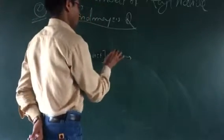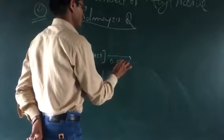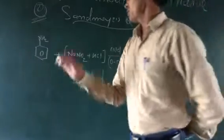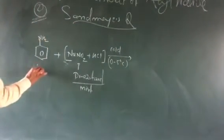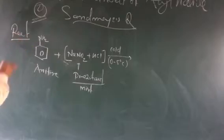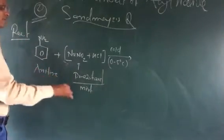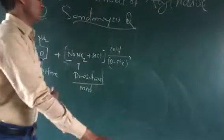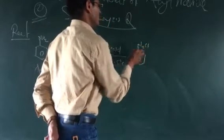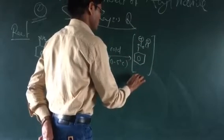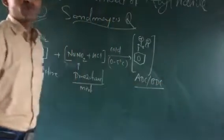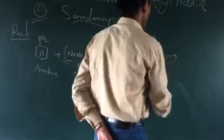This reaction is carried out at 0 to 5 degrees Celsius — cold conditions. Aniline, being a primary aromatic amine, is reacted with the diazotized mixture at 0 to 5 degrees Celsius, resulting in the formation of a salt — aryl diazonium chloride, also known as ADC or BDC (benzene diazonium chloride).